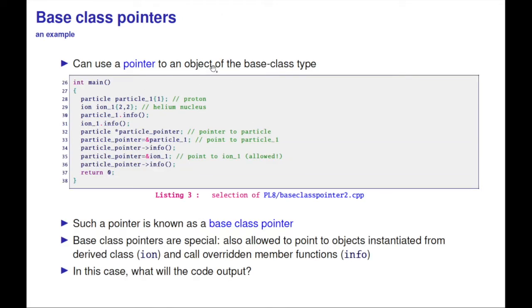I can also use a pointer to an object of the base class type. I can declare a particle pointer. Interestingly, I can either assign a base class element to it or assign an ion to it, even though it's inherited. So we've got this thing called a base class pointer. They're special—they're allowed to point to objects instantiated from a derived class and call overridden functions like info.